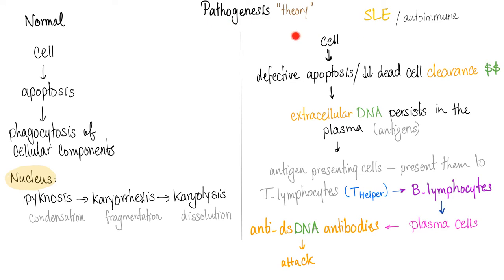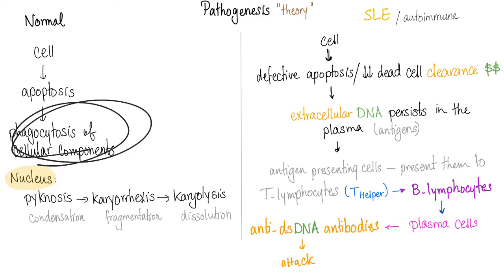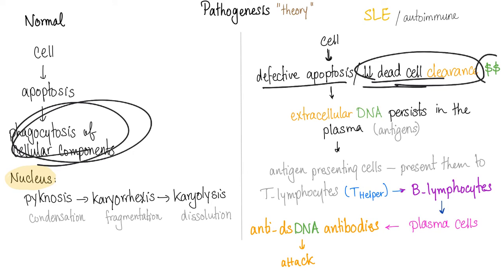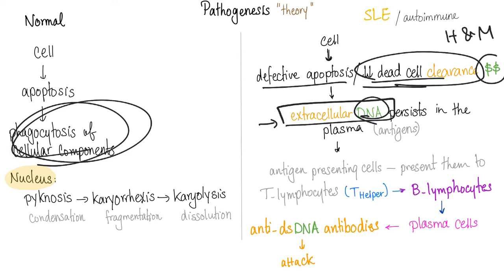On the other hand, when you have a pathology such as lupus, there is defective apoptosis and decreased dead cell clearance. The cell is not capable of cleaning up all cellular compartments peacefully. Extracellular DNA persists because nobody is cleaning up the place — and DNA is supposed to be inside the cell, not in the extracellular space. This is called defective apoptosis and decreased dead cell clearance.